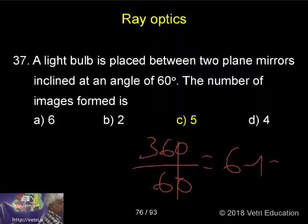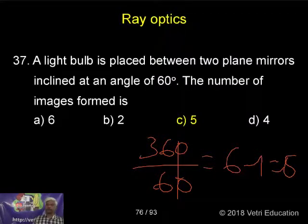Therefore, 6 minus 1 equals 5. If the answer comes 5, we have to put 5 only.